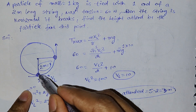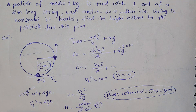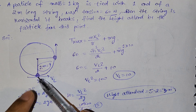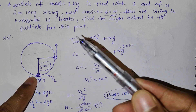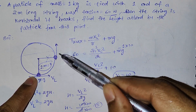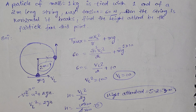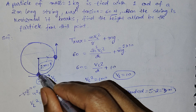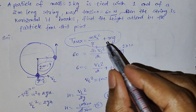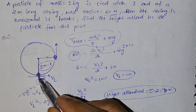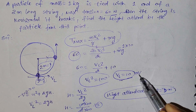Next question: in vertical circular motion the string length equals the radius. Maximum tension is given as 60N. When the particle reaches horizontal, the string breaks. T_max = mv² / r + mg at the lowest point. With T_max = 60N, you can calculate the velocity at the lowest point, which comes out to 10 m/s.